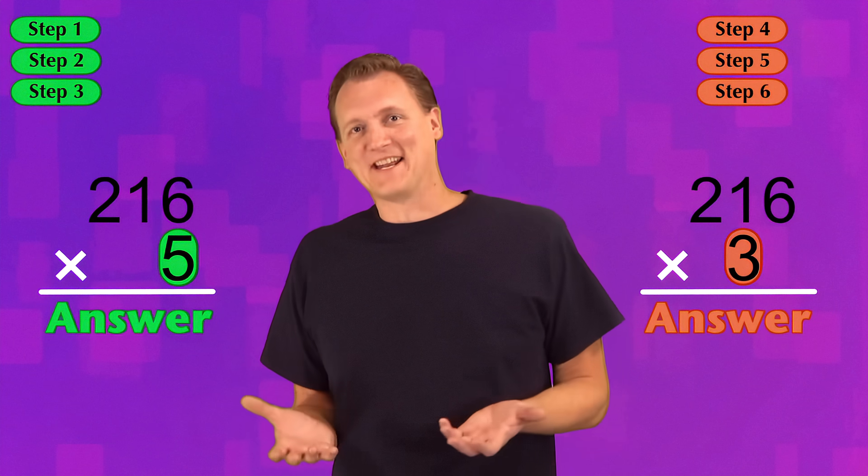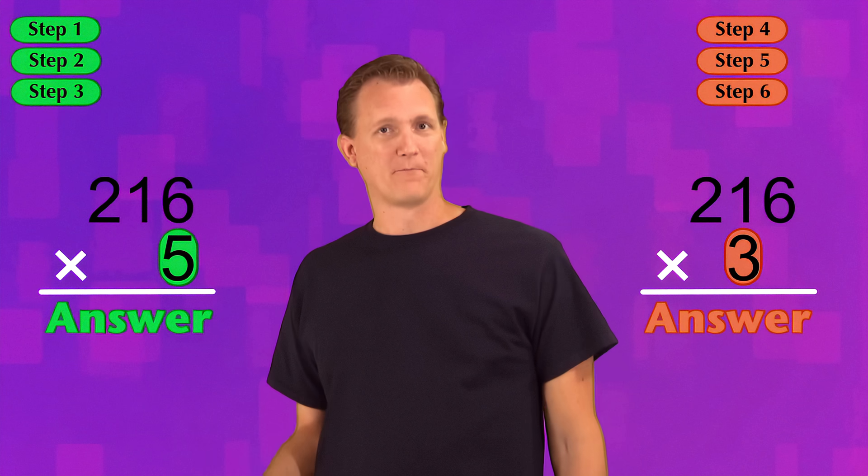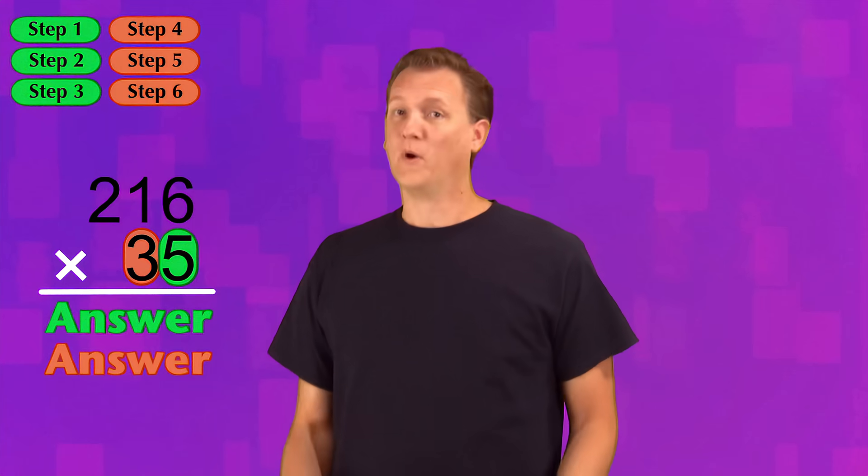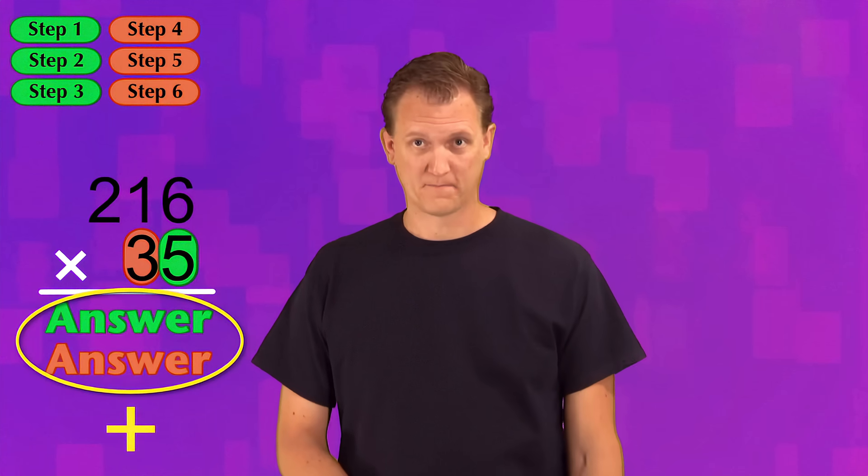Well, I mean, it's nice because we already know how to multiply when we have a one-digit bottom number. But then what will we do with the two different answers we're going to get? Well, it turns out that all we have to do is add them together once we're finished doing all of our multiplication steps. Are you ready to see an example? It should make a lot more sense when you see the procedure in action.